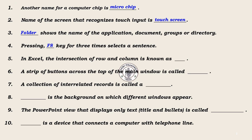5. In Excel, the intersection of row and column is known as cell. 6. A strip of buttons across the top of the main window is called ribbon.